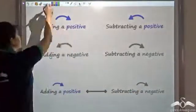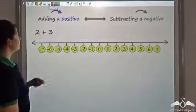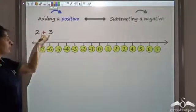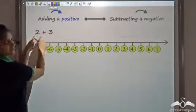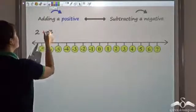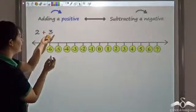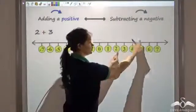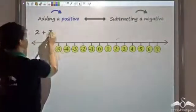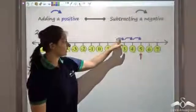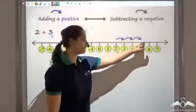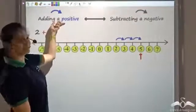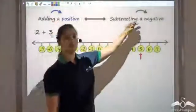Let's look at this. I take two numbers, 2 and 3, and add two positive numbers. If I want to add 3 to 2, I will start from 2 and add 3. So I start from 2 and move forward: 1, 2, 3. I get 5. That is adding a positive number.